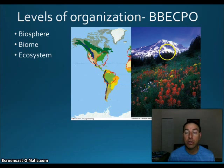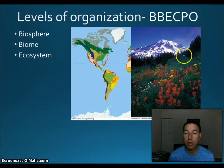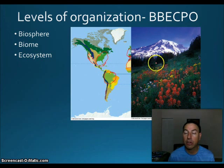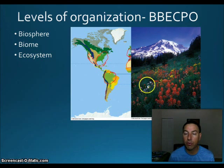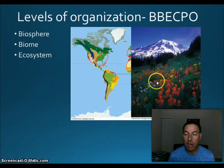The next level is the ecosystem. If we look at small parts of a biome, we can look at individual ecosystems. Here we have a mountain ecosystem with flowers and larger pine trees at lower elevation, more of a tundra ecosystem higher up, and a coniferous forest ecosystem in between. That's our next level of ecological study.